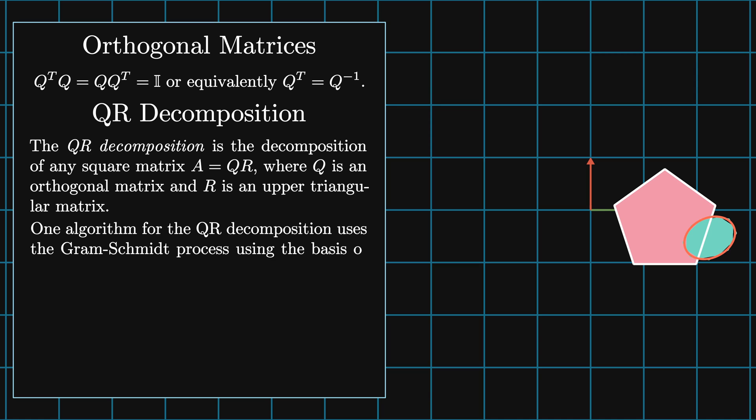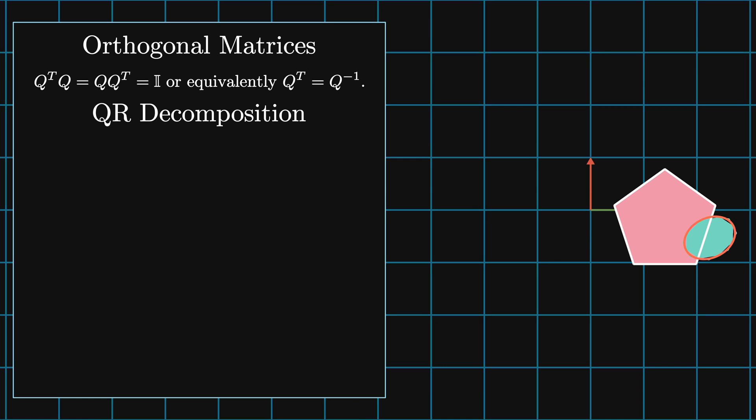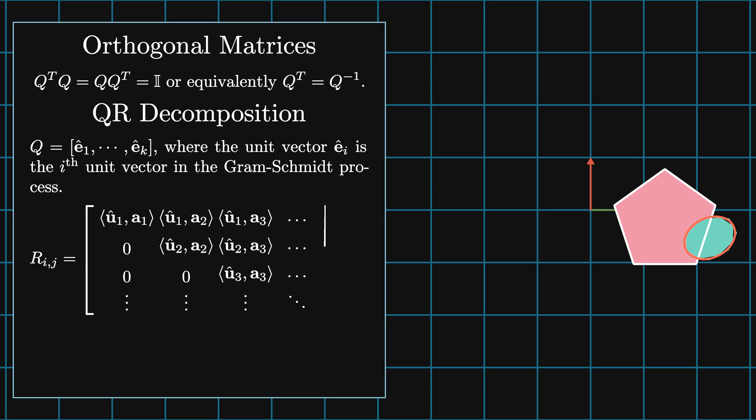You can think of this as a unitary operation on a particular basis for A. One algorithm for QR decomposition uses the Gram-Schmidt process using the basis of column vectors for A. We can write Q as a matrix of unit vectors coming from the Gram-Schmidt orthogonalization of A. The upper right triangular matrix R is then a matrix of projections of the components of the columns of A onto the basis vectors of Q. We will return to this technique in the next video where we explore data fitting and linear regression.